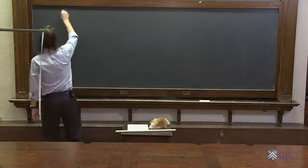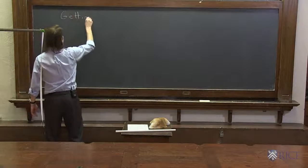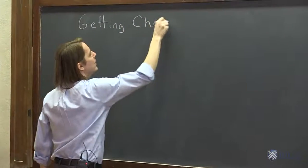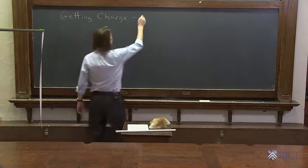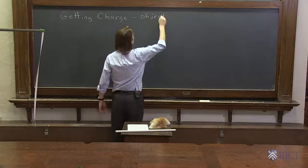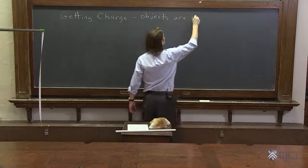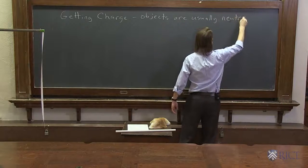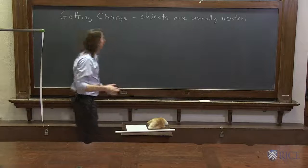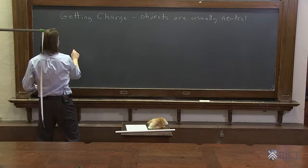Now we're going to talk about getting charged, and by that I mean acquiring some charge. So objects are usually neutral, and by that I mean if I just draw a couple of general objects here, I'll just make them squares: square A and square B.